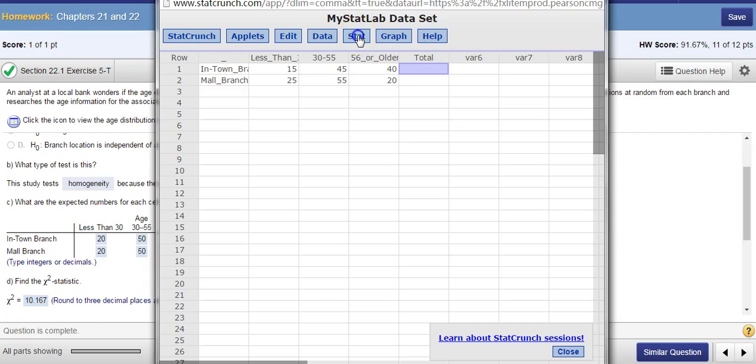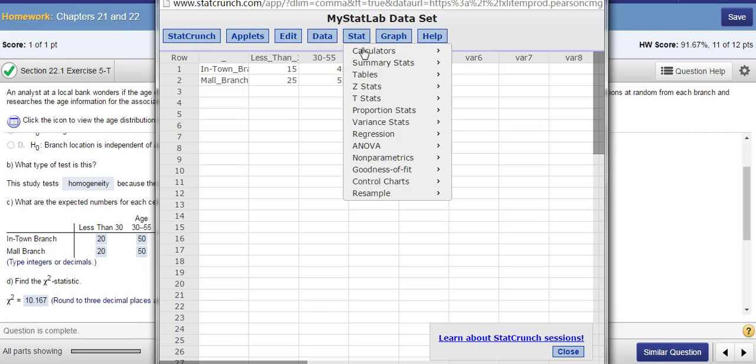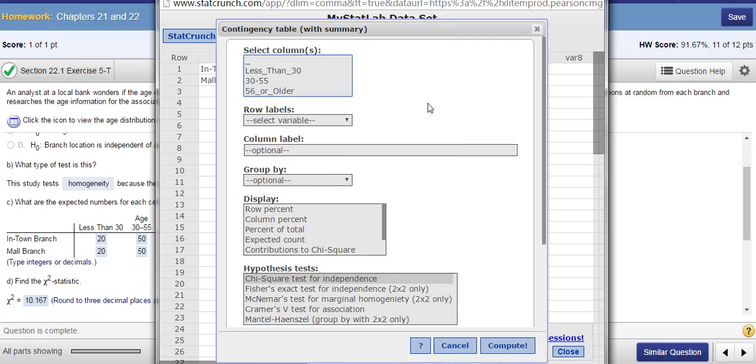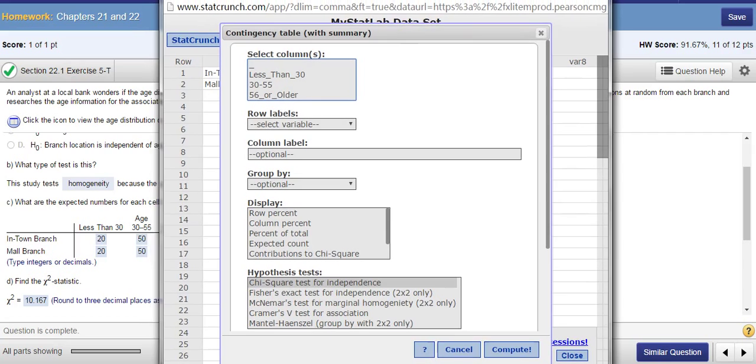So you're going to go to Stats. Since we have a contingency table, we're going to go to Tables, Contingency, with Summary. Now select your columns. Look at our columns. What are the columns that we have?